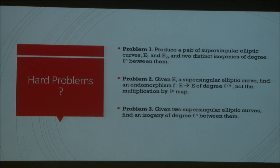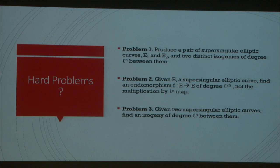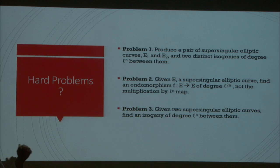Can anybody think of any natural endomorphisms of an elliptic curve? Doubling — yes. Doubling takes a point and multiplies it by two; two times a point is just P plus P. Another natural map is the identity. Multiplication by any other integer: multiplication by three means adding P to itself three times. We also know how to negate a point, so we can take multiplication by minus two. So we have all the integers giving us natural endomorphisms of an elliptic curve.